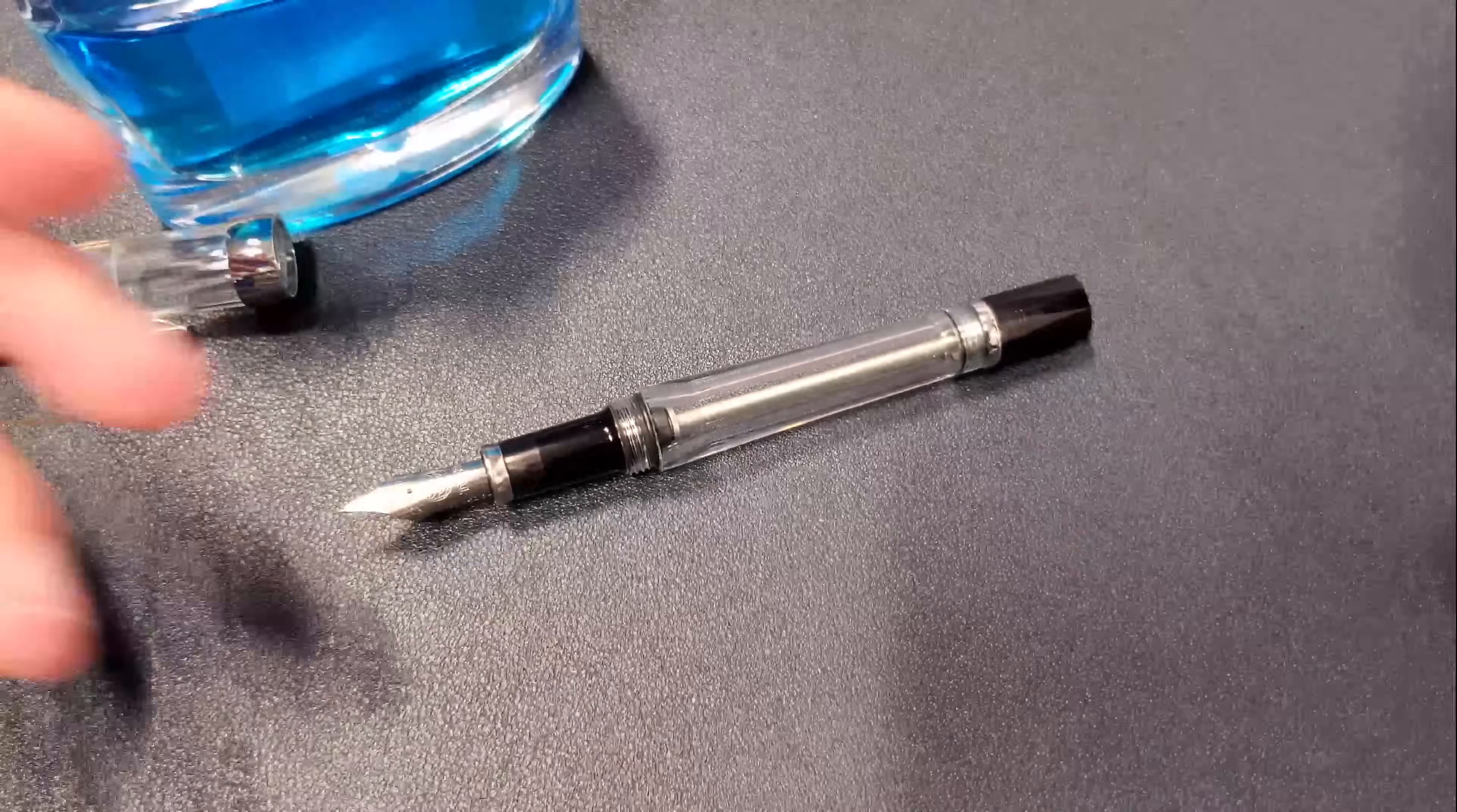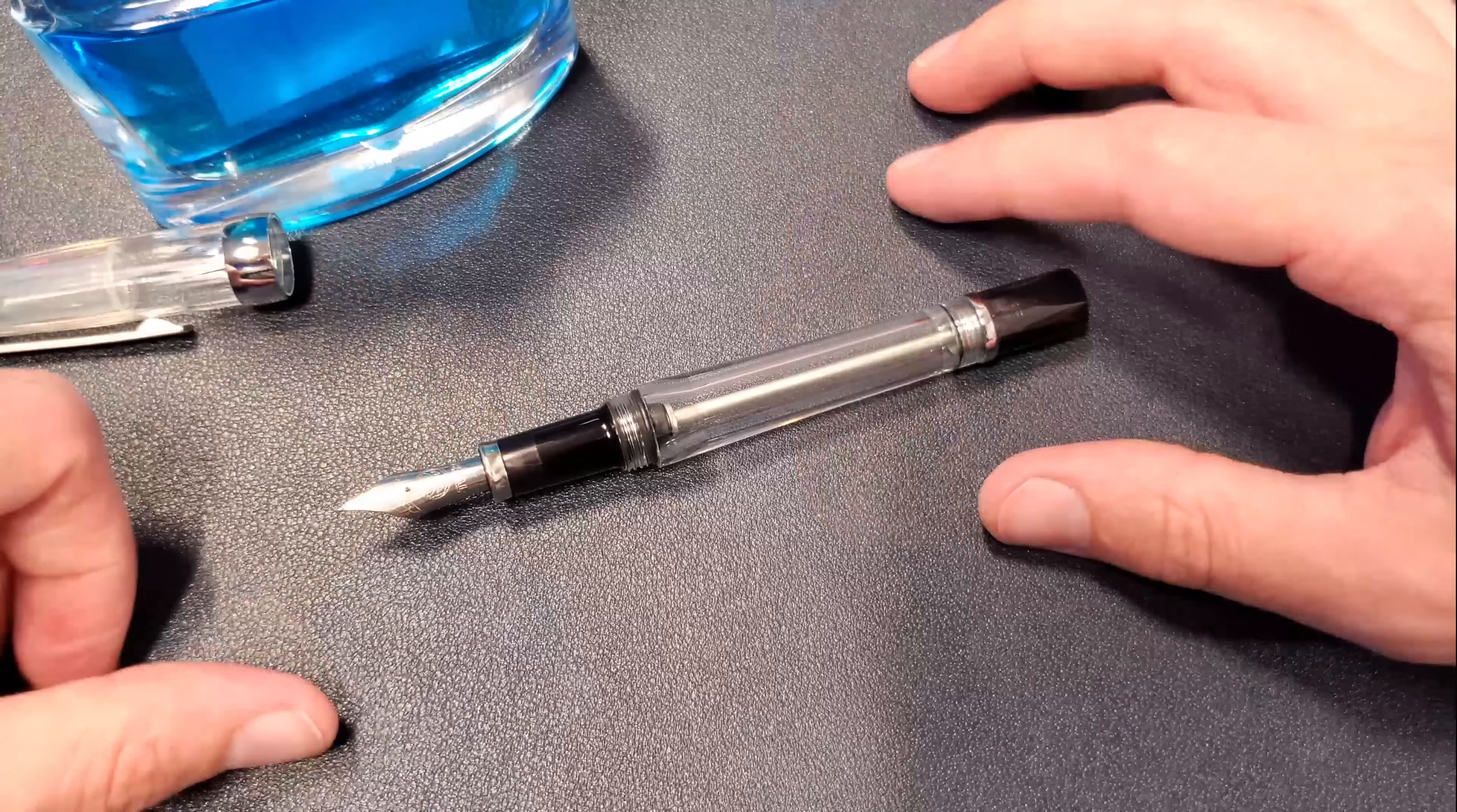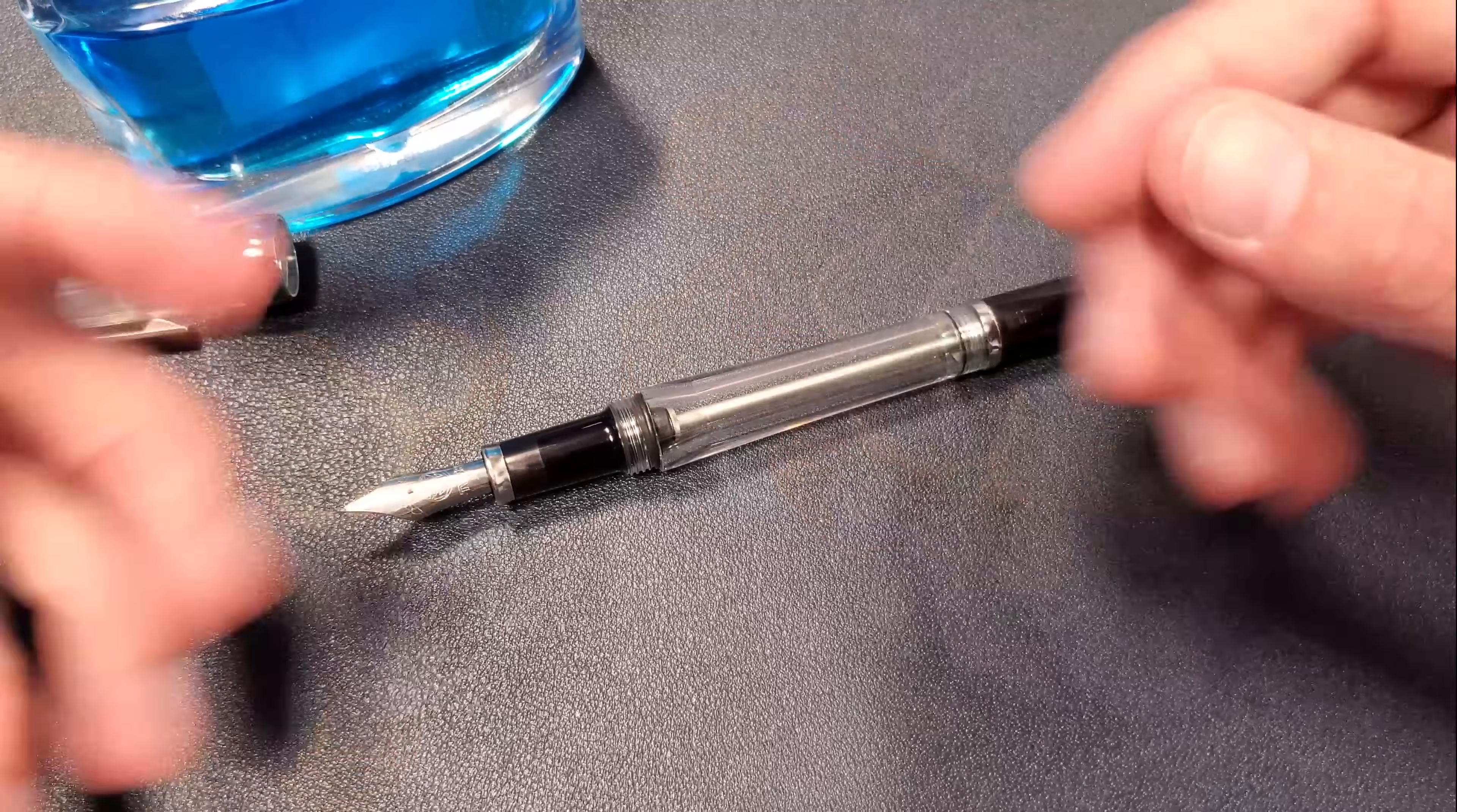Mainly to defend against any sort of funky pressure changes, usually due to a change in altitude. It could cause ink to go where it's not supposed to go. But if you have it sealed off like this, you minimize that risk.